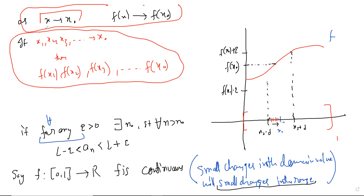The epsilon-delta statement and the sequence statement are the same statement — intuitively it seems clear, though the proof is not the simplest. The sequence x1, x2, x3 converging to x-naught means the limit is x-naught. It means that the sequence eventually moves closer and closer to x-naught — as close as you want, provided you take enough terms.